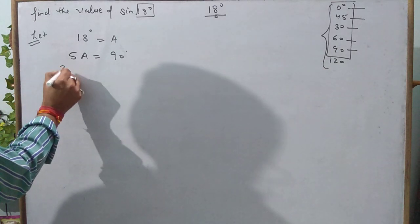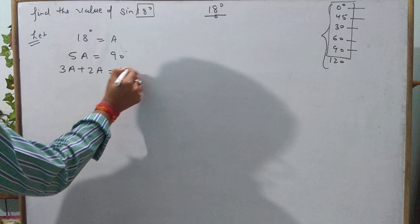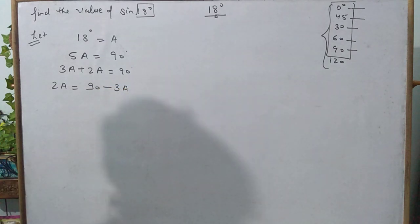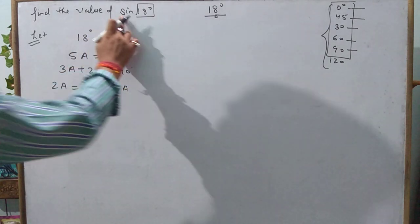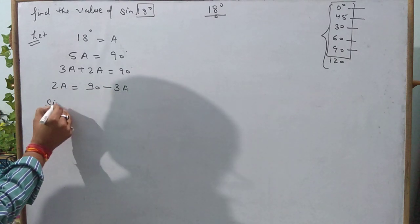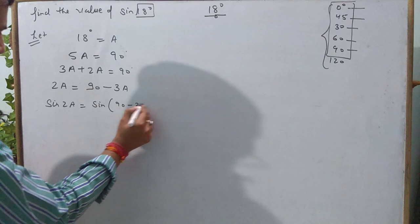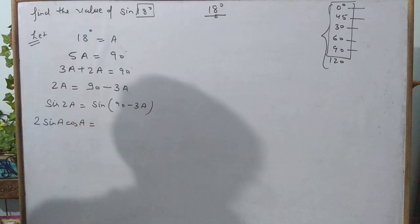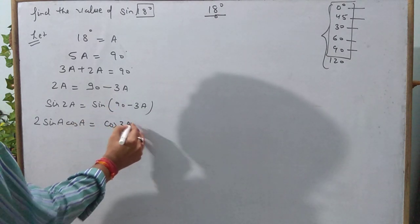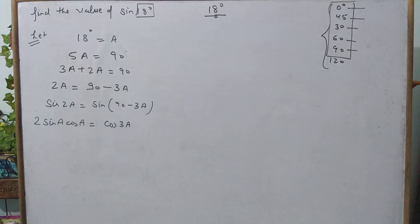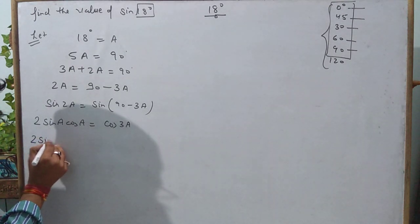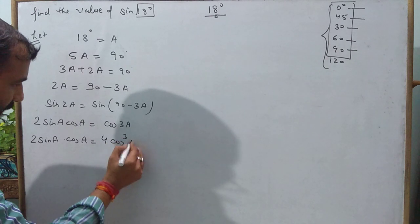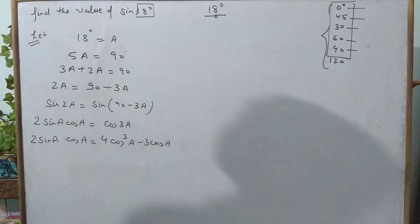Write 5a as 3a + 2a = 90°, so 2a = 90° − 3a. Taking sin of both sides: sin2a = sin(90° − 3a). Applying formula: sin2a = 2sinA cosA, and sin(90° − 3a) = cos3a. So 2sinA cosA = cos3a. Applying the formula cos3a = 4cos³a − 3cosA gives 2sinA cosA = 4cos³a − 3cosA.